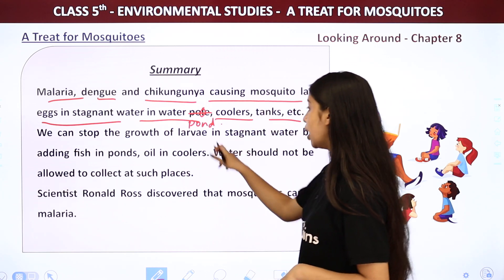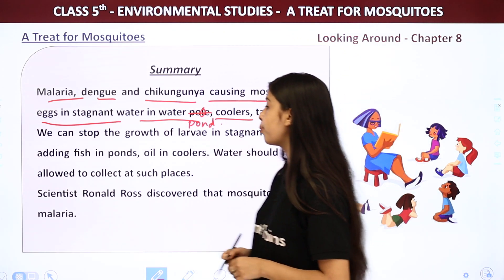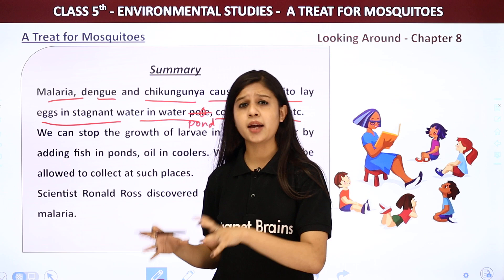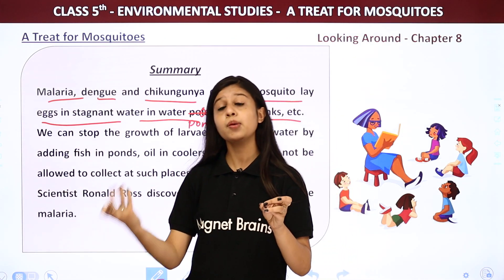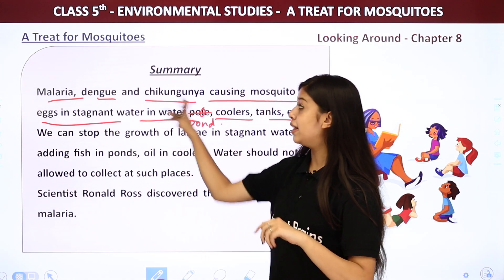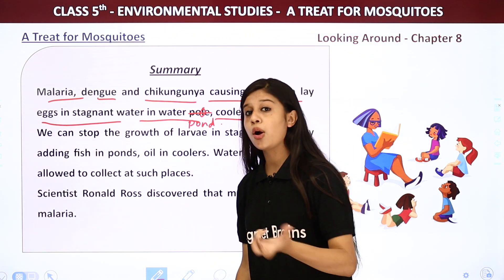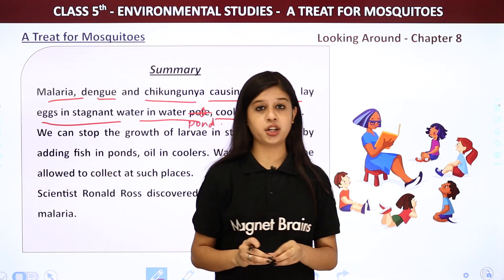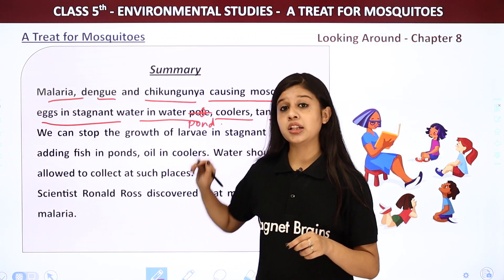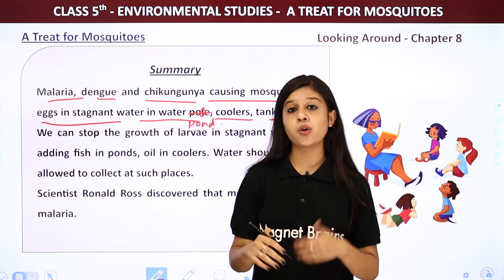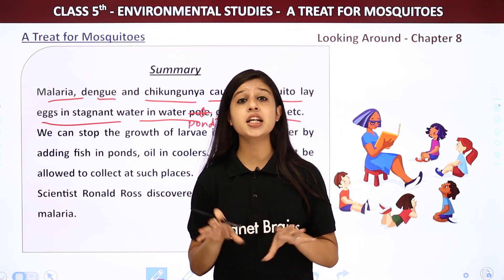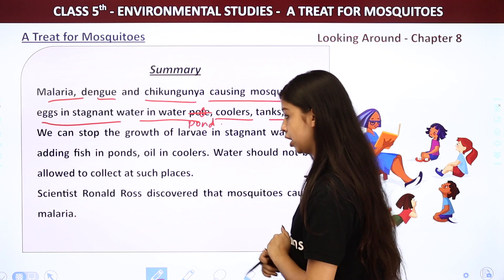We can stop the growth of larvae in stagnant water by adding fish in the ponds and oil in the coolers — fish will eat the larvae. Spreading kerosene in the water will also kill the germs. Water should not be allowed to collect at unnecessary places.